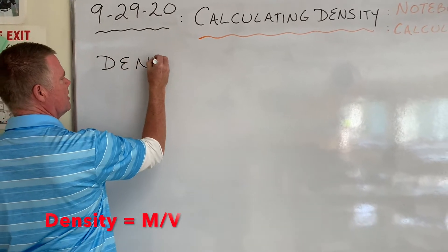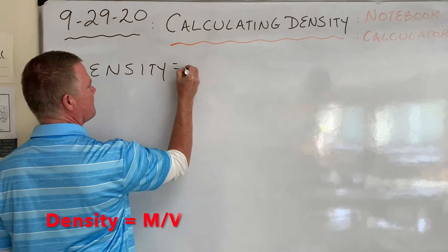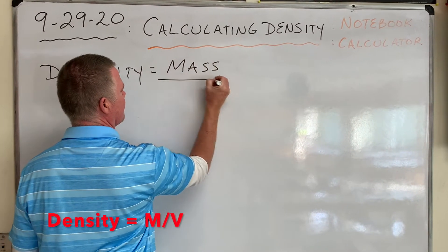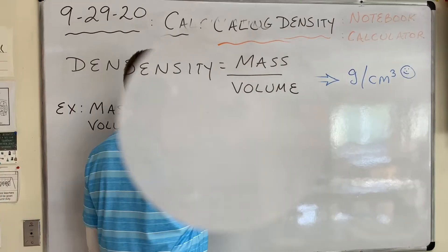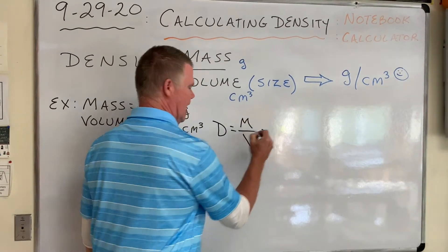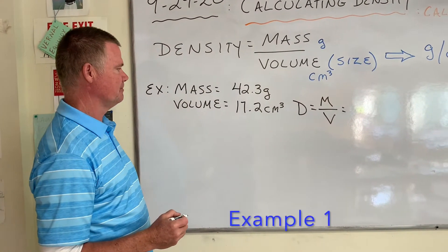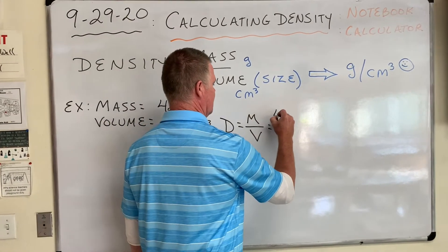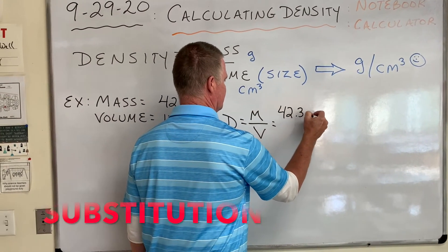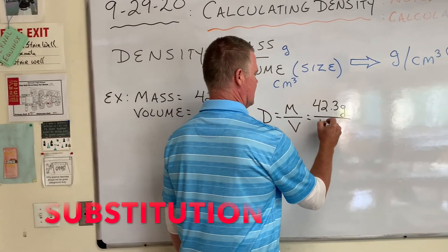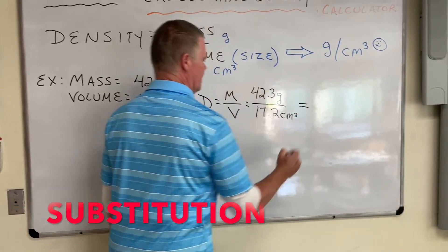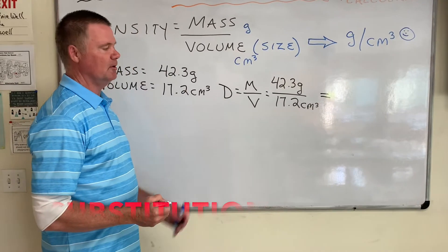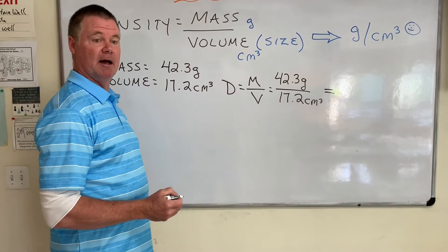If we write something on the board, it's something you should write in your notebook. I have a formula. You may abbreviate and shorten the formula. You simply put in the numbers: 42.3 grams divided by 17.2 cubic centimeters. At this point, please stop the video, do your calculation, and turn the video back on once you have it.